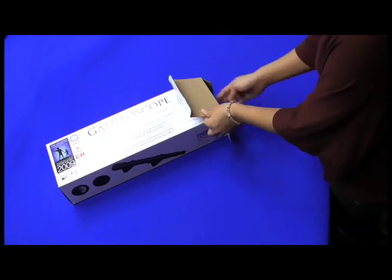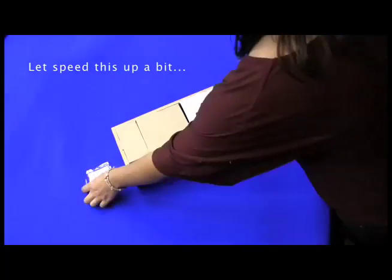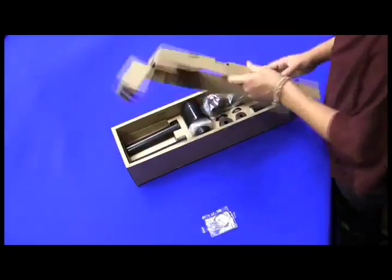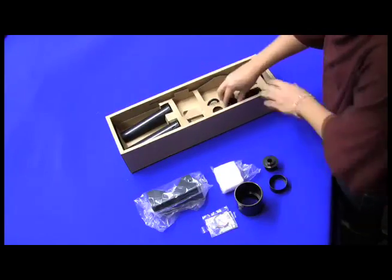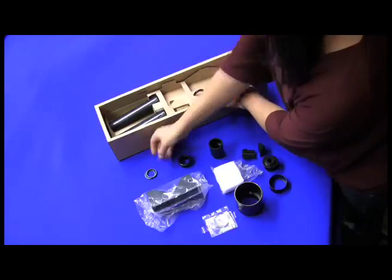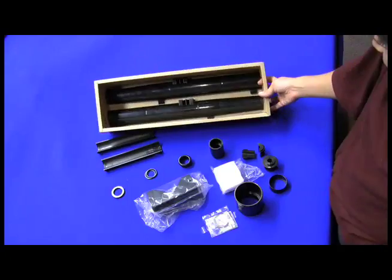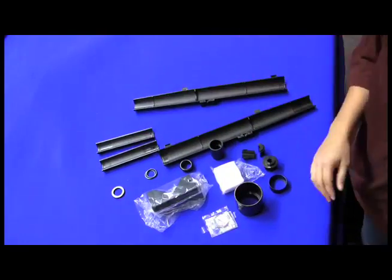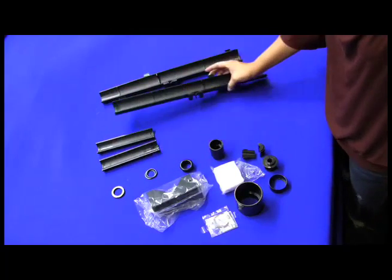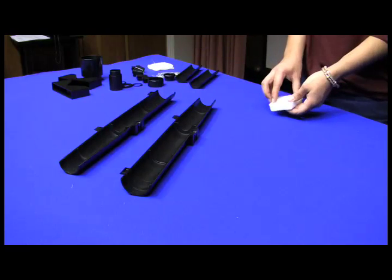Carefully unpack the contents of the Galileoscope box. You should have two long half cylinders. You will find the large glass objective lens inside foam to protect it during transit. Carefully remove the lens.